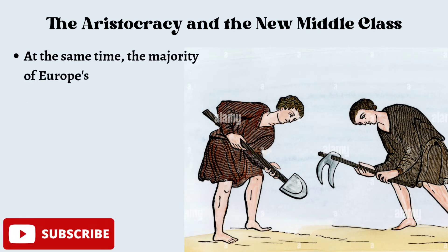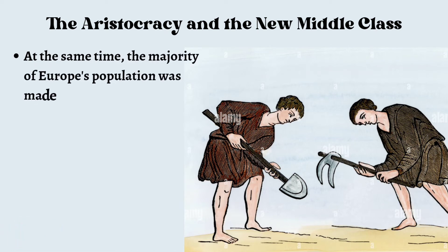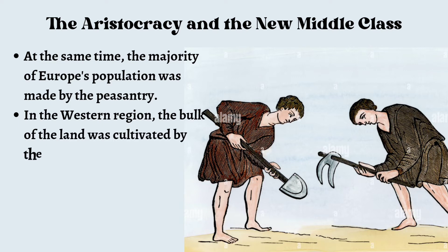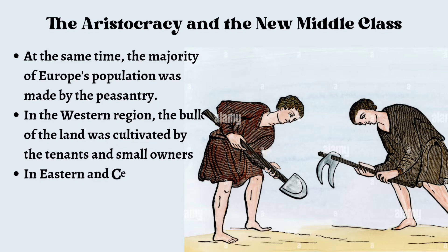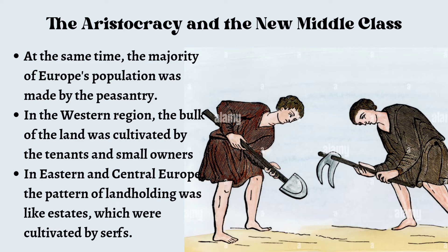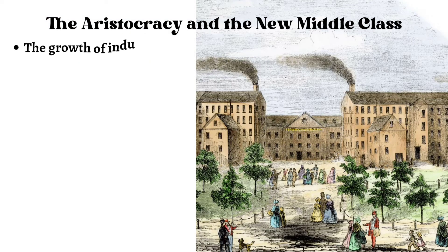At the same time, the majority of Europe's population was made up of the peasantry. In the western region, the bulk of the land was cultivated by tenants and small owners. In the eastern and central Europe, the pattern of land-holding was like estates, which were cultivated by serfs. So tenants or serfs were present in large numbers in Europe during those times.